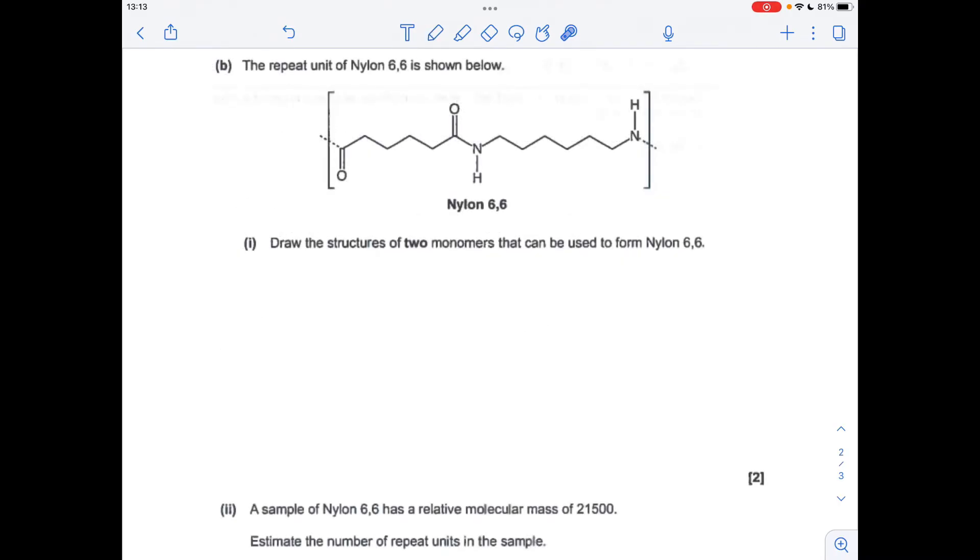Moving on to part B now, we've got a repeat unit of nylon 6-6. This is a polyamide, it's got this amide bond, so we're going the other way basically - going from the repeat unit to the two monomers that have been used to make this.